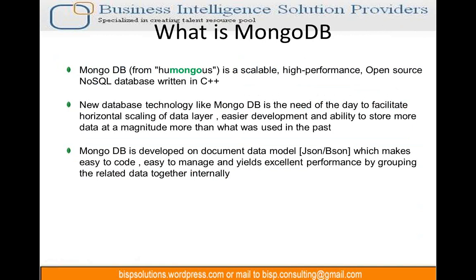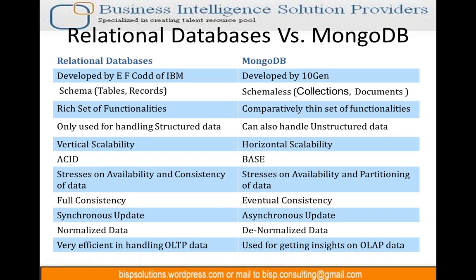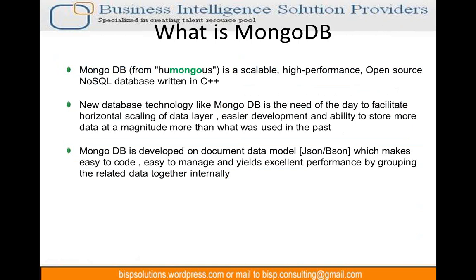MongoDB retrieves data at a much faster pace because everything is binary serialized — stored in binary form as 0s and 1s. That makes retrieval very easy. To summarize: MongoDB is a document-based database that helps in handling the big data problem, and scalability puts MongoDB in a very special place — we are able to scale things across different nodes.